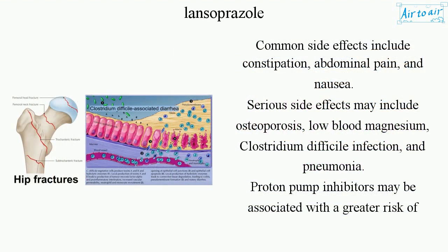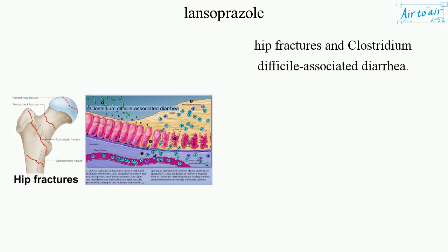Common side effects include constipation, abdominal pain, and nausea. Serious side effects may include osteoporosis, low blood magnesium, Clostridium difficile infection, and pneumonia. Proton pump inhibitors may be associated with a greater risk of hip fractures and Clostridium difficile-associated diarrhea.